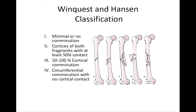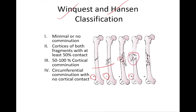Shaft of femur fractures are commonly classified using the Winquist and Hansen classification. In Type 0/1 there is minimal or no comminution. In Type 2, the cortices of both fragments have at least 50% contact. In Type 3, there is 50 to 100% comminution at the cortices. In Type 4, there is circumferential comminution with no cortical contact whatsoever.